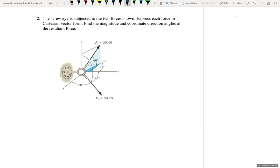All right, so let's start by looking at what we have. We have F2, which gives us coordinate direction angles. We love those.